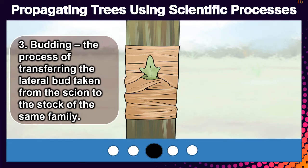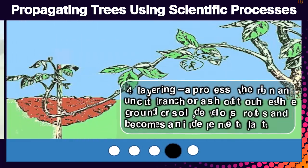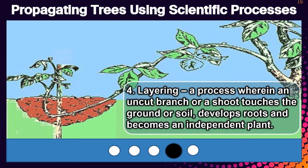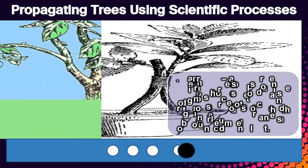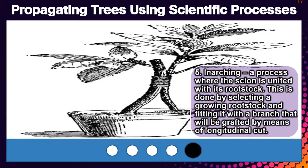Layering is a process wherein an uncut branch or a shoot touches the ground or soil, develops roots, and becomes an independent plant. Inarching is a process where the scion is united with its rootstock. This is done by selecting a growing rootstock and fitting it with a branch that will be grafted by means of a longitudinal cut.